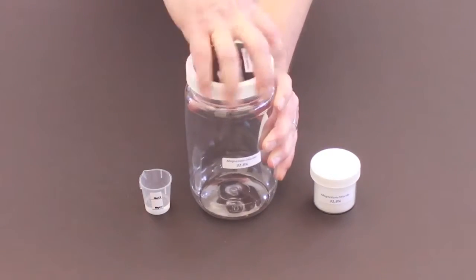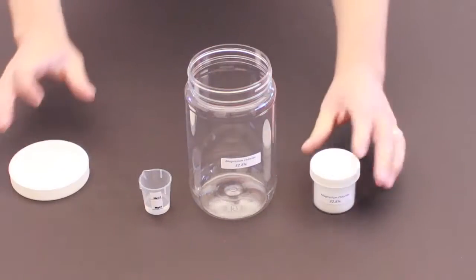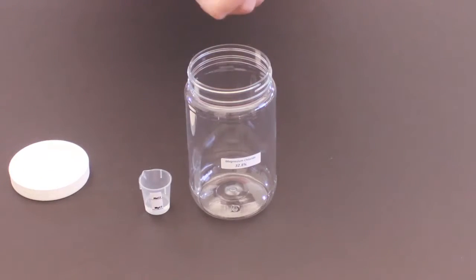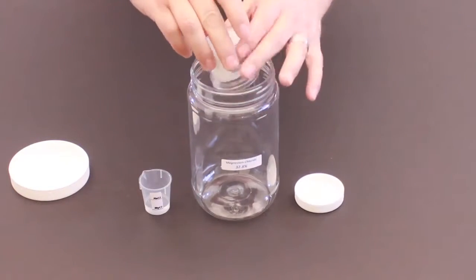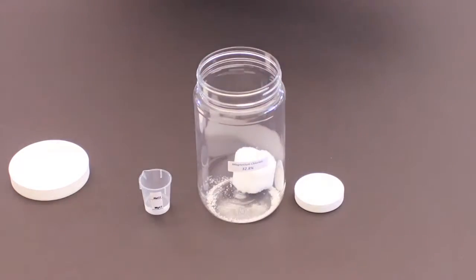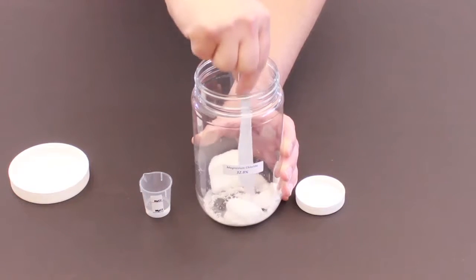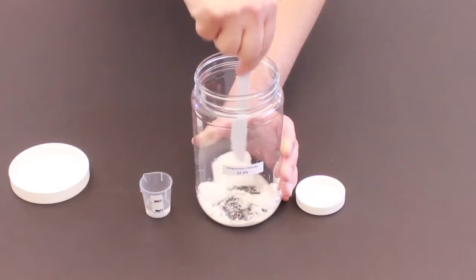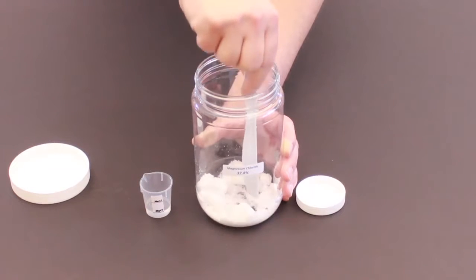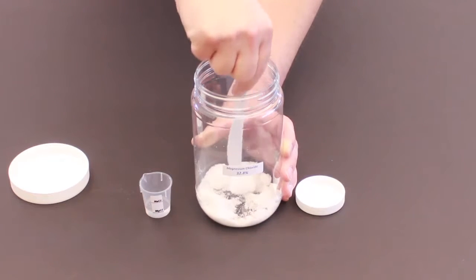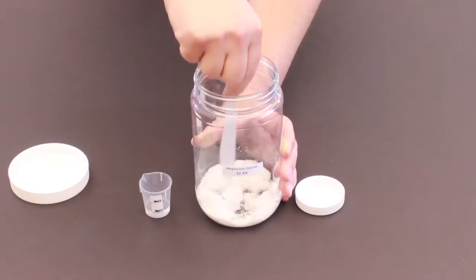So we're going to open this up. We're going to take the blue with the blue label. Dump all the salts in the bottom. Now, if it's real humid, you may have to break this up a little bit. Use a different knife than the first one because you do not want to cross contaminate these items, and when the liquid comes in, it'll help break it up as well.